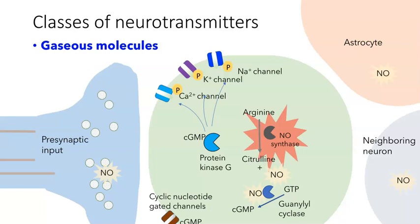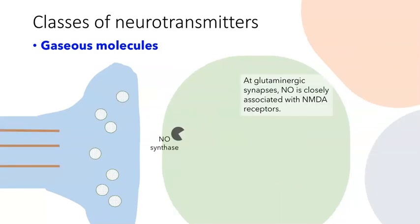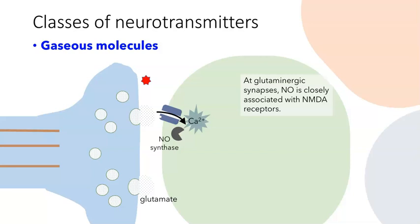How is NO synthase activated? There's more than one way. At glutamatergic synapses, NO synthase is closely associated with NMDA receptors. Remember that NMDA receptors are a classic glutamate receptor with a magnesium block. If the magnesium block is removed, when glutamate is released and binds, calcium comes into the cell. It's this influx of calcium through NMDA channels that activates the NO synthase molecule, so it can take arginine and produce NO. Nitric oxide can have different effects depending on its concentration — at low concentrations it is generally thought to be beneficial, but at high concentrations it can be harmful.